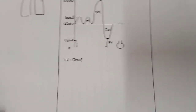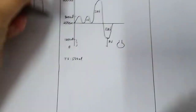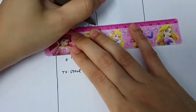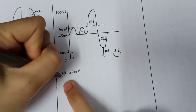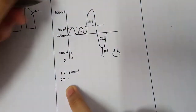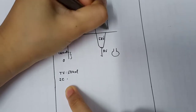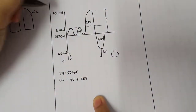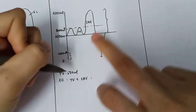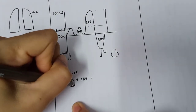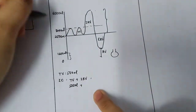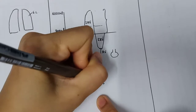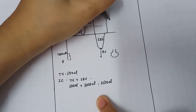The usual questions in the MRCOG are about these volumes, so let's go step by step. The inspiratory capacity is basically the tidal volume plus the inspiratory residual volume. For example, we have a tidal volume of 500 ml and an inspiratory residual volume of about 3,000 ml, so the inspiratory capacity becomes 3,500 ml.